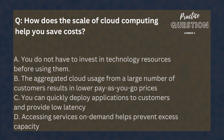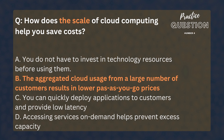How does the scale of cloud computing help you save costs? Options: You do not have to invest in technology resources before using them; the aggregated cloud usage from a large number of customers results in lower pay-as-you-go prices; you can quickly deploy applications to customers and provide low latency; accessing services on demand helps prevent excess capacity. This is a tricky question as multiple statements are correct, but look for keywords in the question. This question tests your knowledge about economies of scale and how aggregated usage over the cloud can result in lower pay-as-you-go prices.